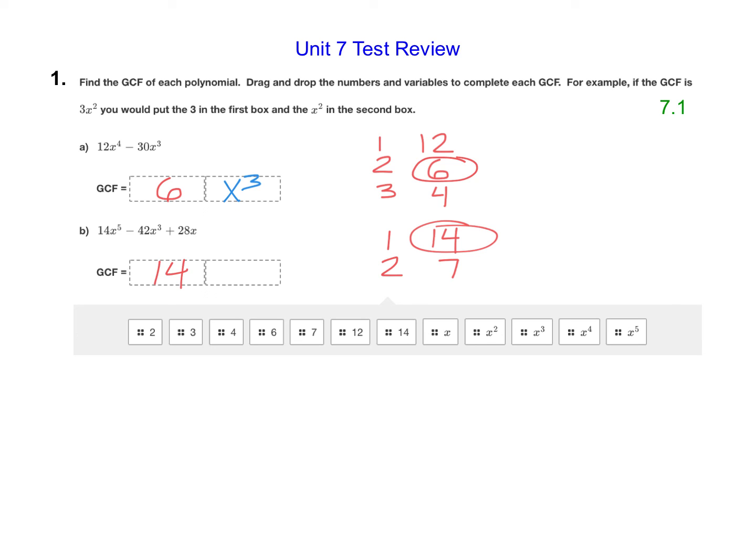And then for our variables, it's always the smallest exponent on the variables. So that would mean if I have x to the fifth, x to the third, and just a plain x, x is the smallest exponent—x is like an x to the first, remember. So 14x would be our greatest common factor.